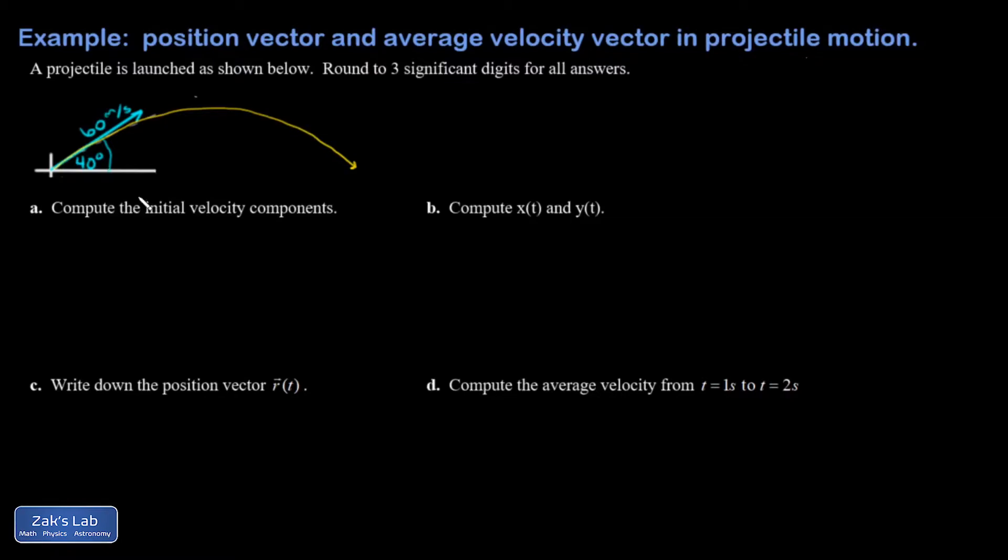After the first question we start to really get into the details of the kinematics. So let's just knock out that first question: the velocity components of the launch. The x component is going to be 60 cosine of 40.